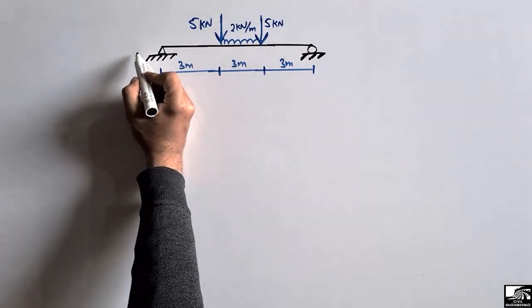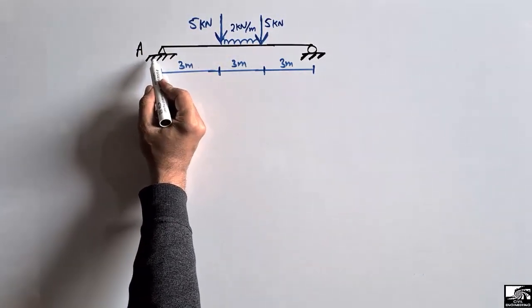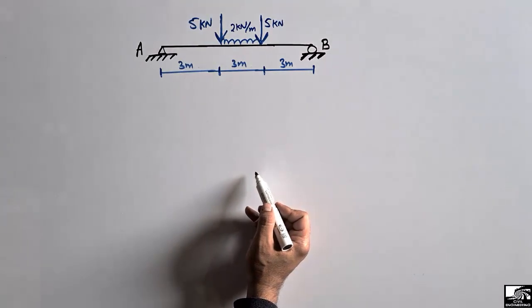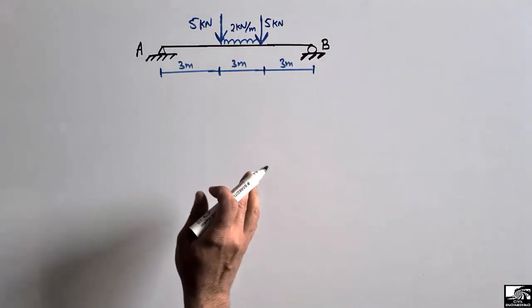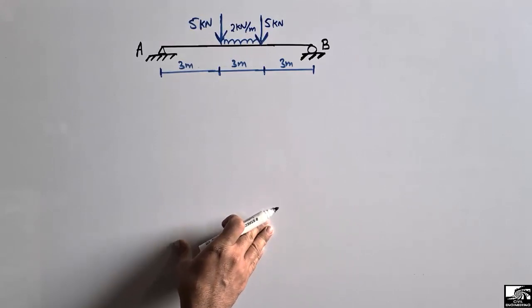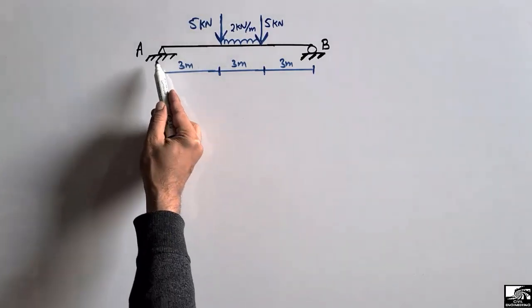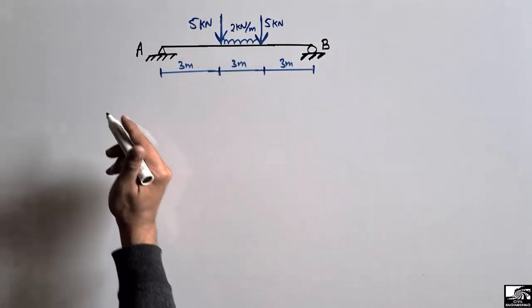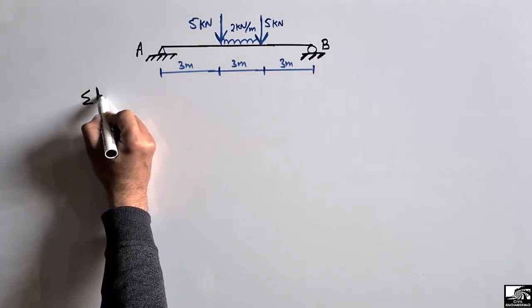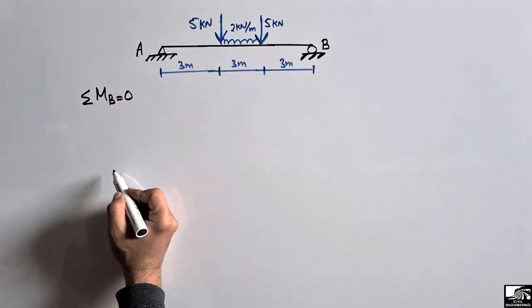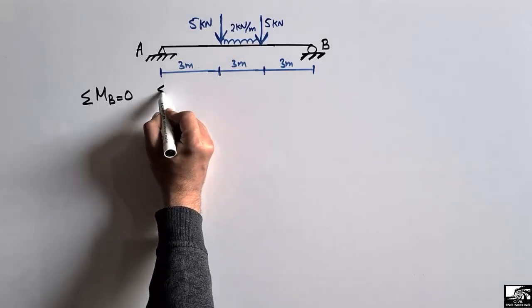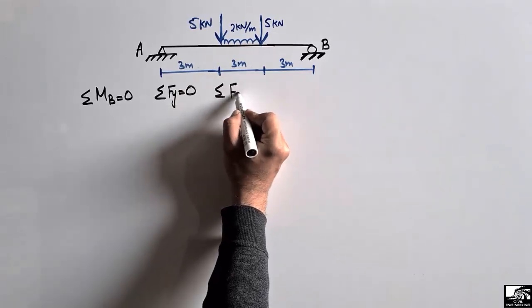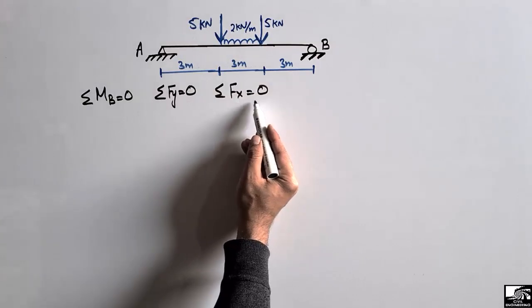To find the support reactions, let's say this is a hinge support represented by point A, and the other support is represented by point B. We can use three equilibrium equations: summation of moments at a point equals zero, summation of vertical forces equals zero, and summation of horizontal forces equals zero.